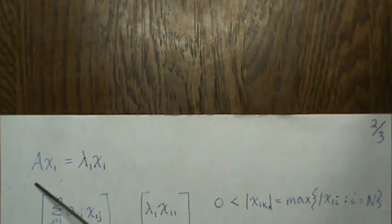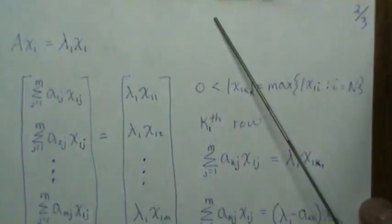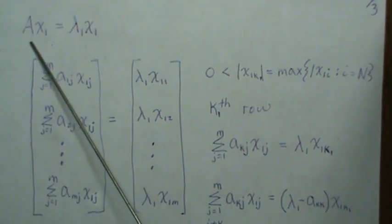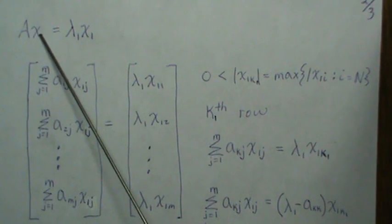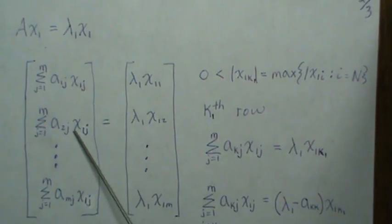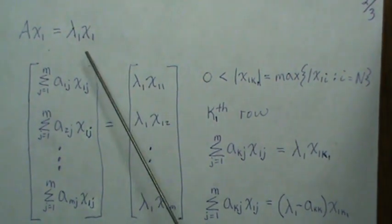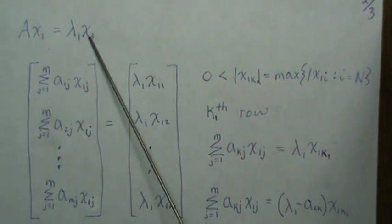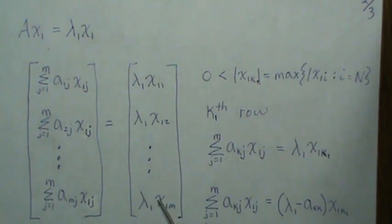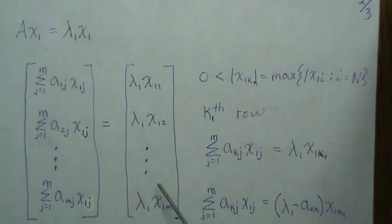And then because they're eigenvalue eigenvectors, they satisfy this relationship, which then in matrix form is this. So over here you take the first row times this column vector which is this, the second row then you get this, the n-th row you get this. This side is just lambda one times the first element, lambda one times the second element, lambda one times the n-th element.